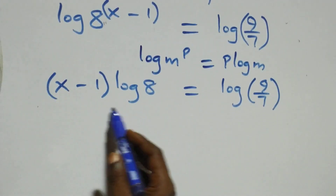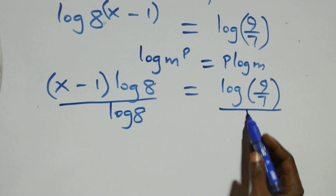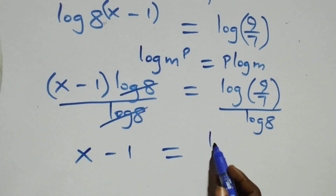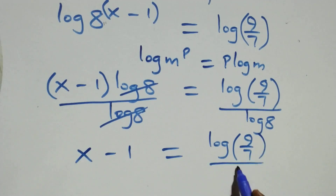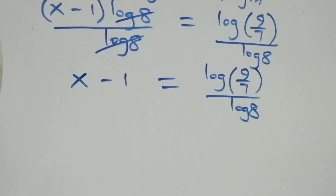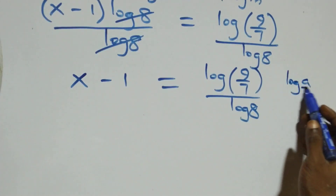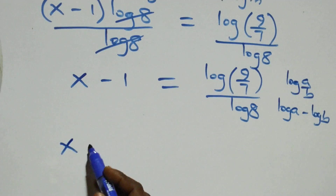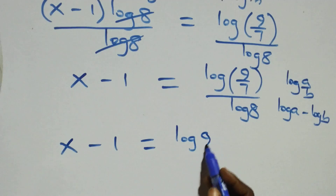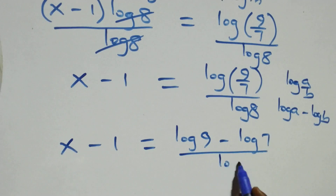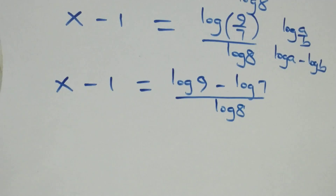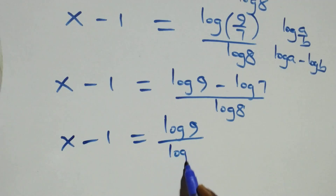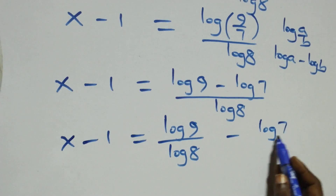Next step, we divide both sides by log 8. The log 8 cancels and we have x minus one equals log of 9 over 7 divided by log 8. We apply the law of logarithms: log a over b can be written as log a minus log b. So we have x minus one equals log 9 minus log 7, all over log 8. Separating into two fractions: x minus one equals log 9 over log 8 minus log 7 over log 8.